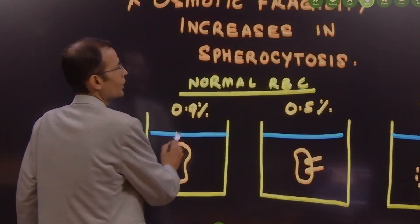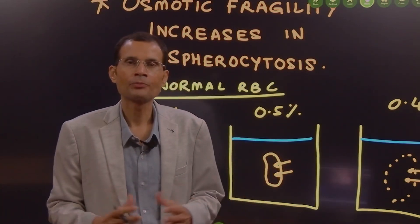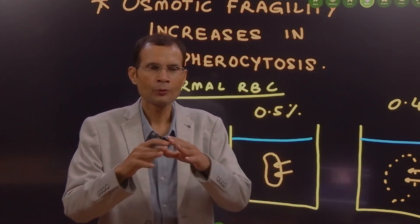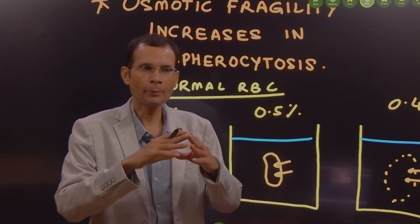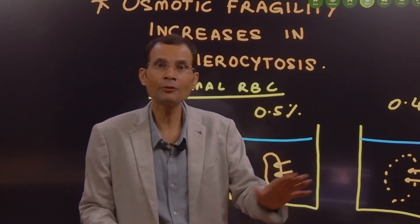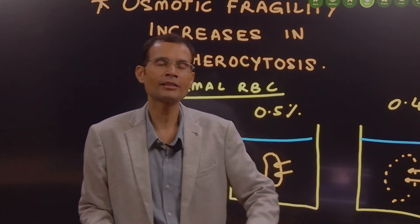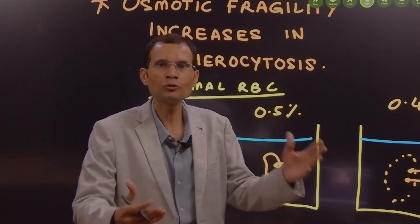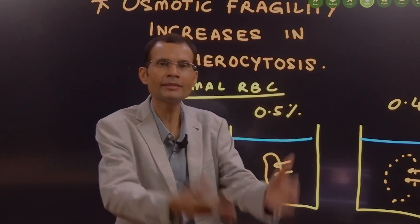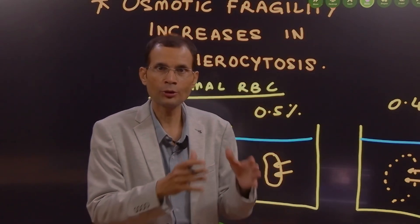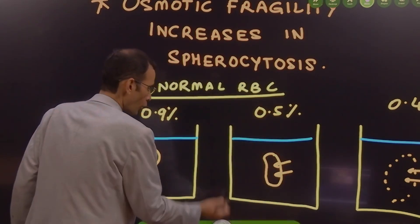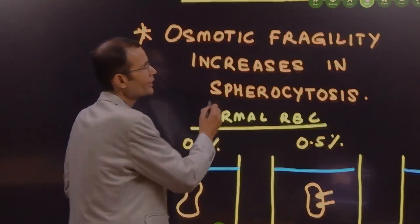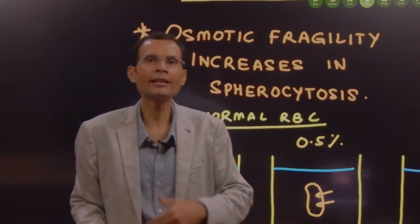Let's understand. First of all, what is fragility? You must have seen at airports or various places, on many parcels they have written 'fragile, handle with care.' It's a fragile material inside — easily breakable with certain movement or handling. So, fragility of the RBC means how it gets broken down.